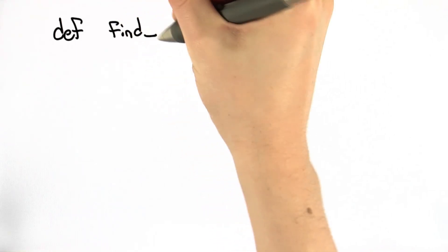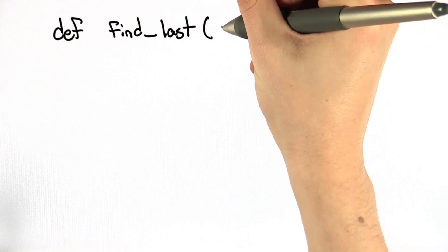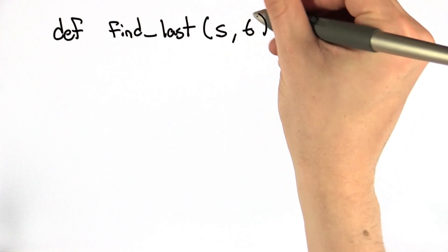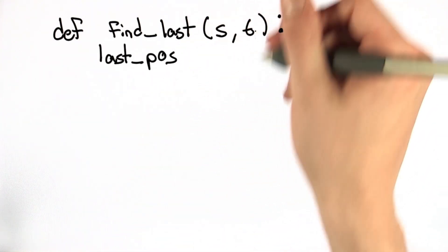This problem asks you to define a function called findLast that takes in two parameters: one string that we're searching in, another string that we're finding. The whole point of this function is to find the position of the last occurrence of t.